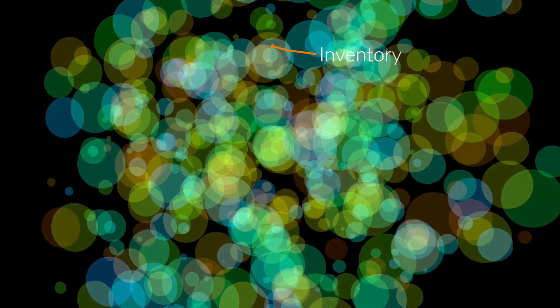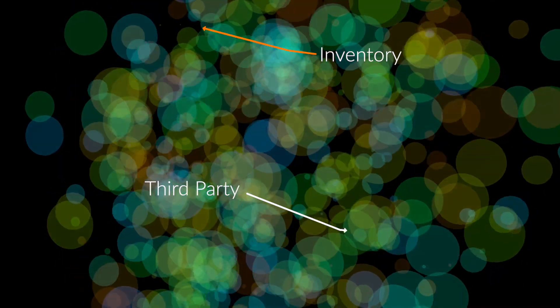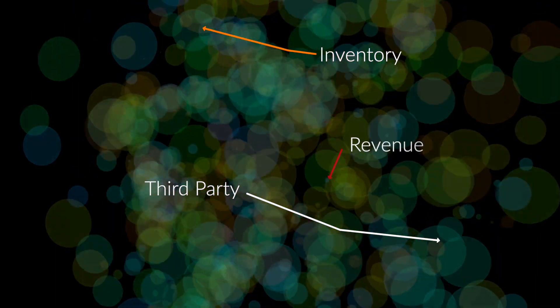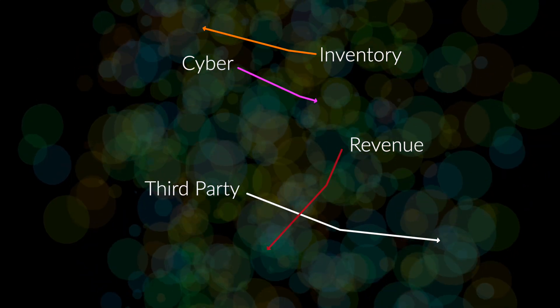This is your control library. Every dot is a control. By using simple analytics, we can take control names and descriptions, cleanse them and identify unique sets of controls.